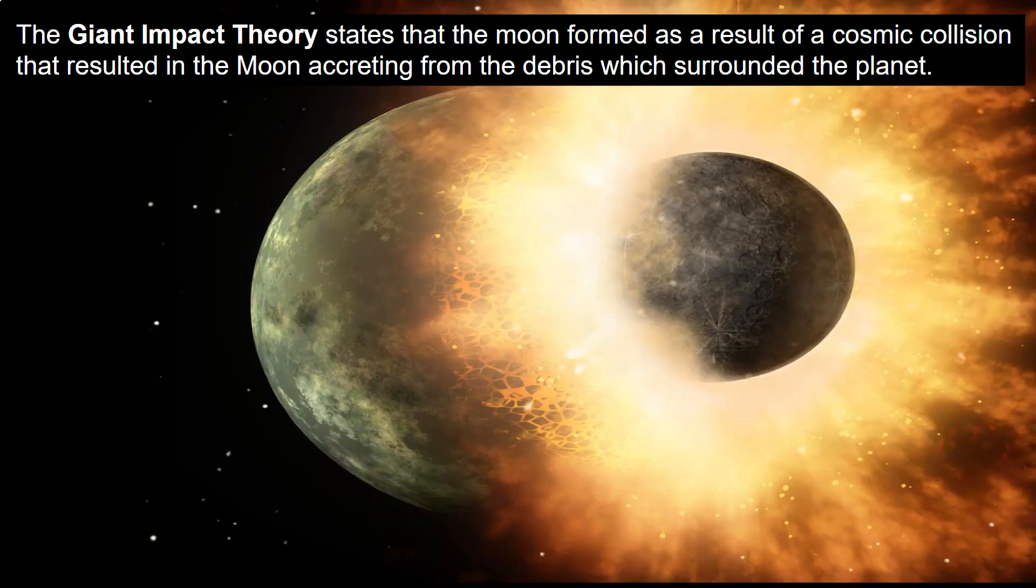Finally, we have the giant impact theory. This theory states that the moon formed as a result of a cosmic collision, accreting from debris which surrounded the planet after the impact.